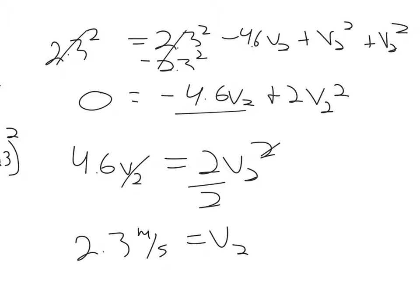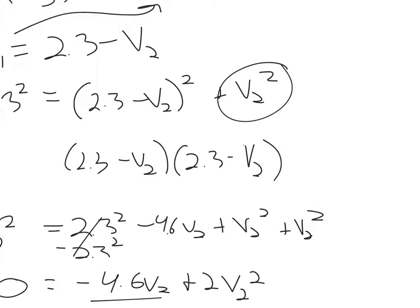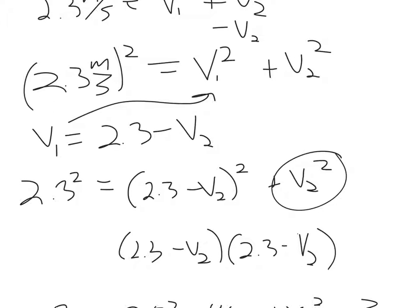The final V2 is 2.3, so if I put that here, 2.3 minus 2.3, so V1 has to be zero. Well, that should fit.